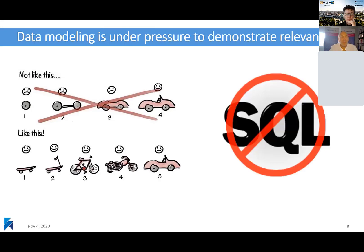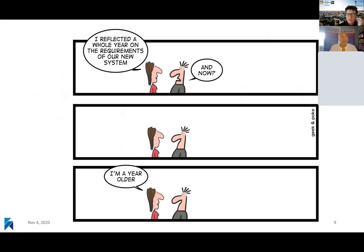This is a conceptual modeling conference, so I think it's important to talk about the state of the industry — because data modeling is under pressure. Part of it is self-inflicted, part is due to being associated with bottlenecks in requirements definition, part is due to misinterpretation of agile development, and part is due to the schema-less nature of NoSQL.